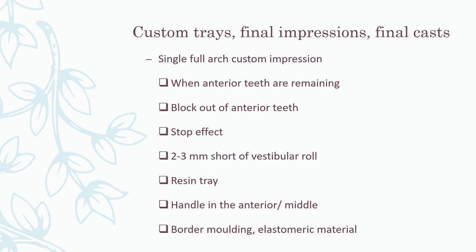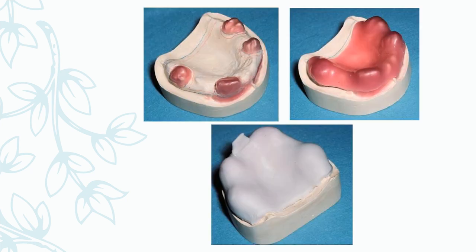Once the diagnostic mounting is done, the next procedure is preparation for the master cast, requiring final impressions. Custom trays are prepared — either a single full-arch custom impression or a dual-arch impression technique. For the single arch, all teeth are blocked out, covered with a thin layer of modelling wax, and an auto-polymerizing or light-cure acrylic resin tray with a central handle is fabricated. The tray should be 2–3 mm short of the vestibule before border moulding and impression-making.